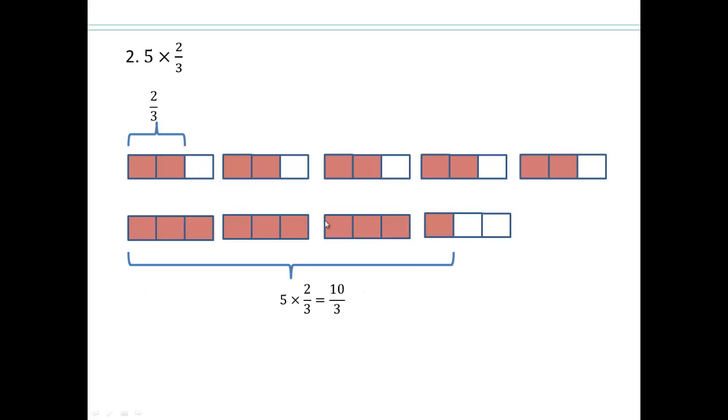Or 3, 6, 9, 10. 10 thirds. You can see here, every time we shaded 2 rectangles and 5 times. So that's 10 rectangles shaded and out of 3 for the whole. The whole is made up of 3. So that's the 10 thirds. So maybe if you do enough of these, you'll start to realize, oh, look, it's 5 times 2 is 10, and the denominator is 3. So 3 and 1 third or 10 thirds is what 5 times 2 thirds is.